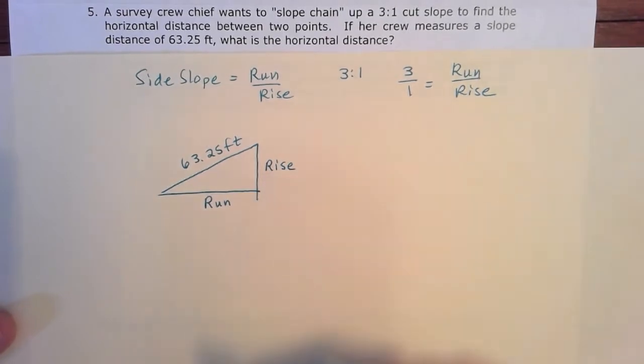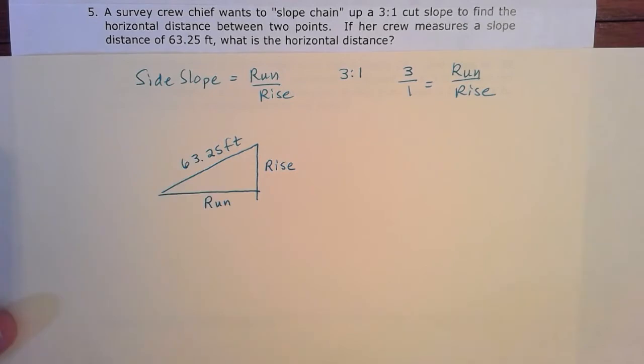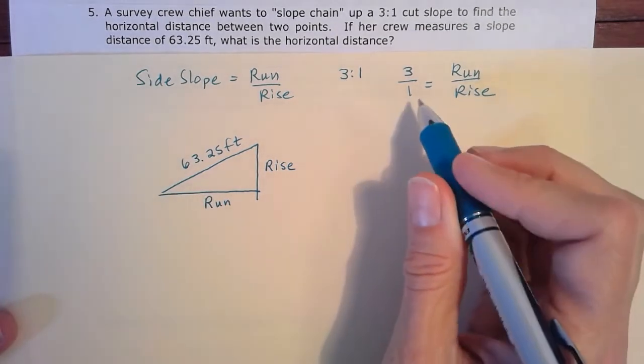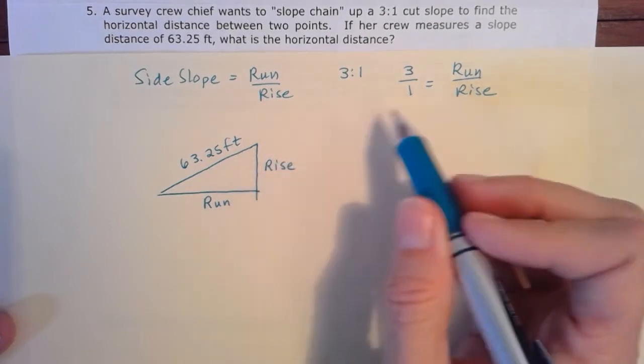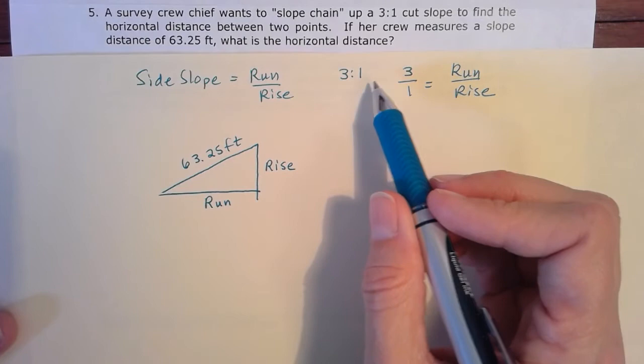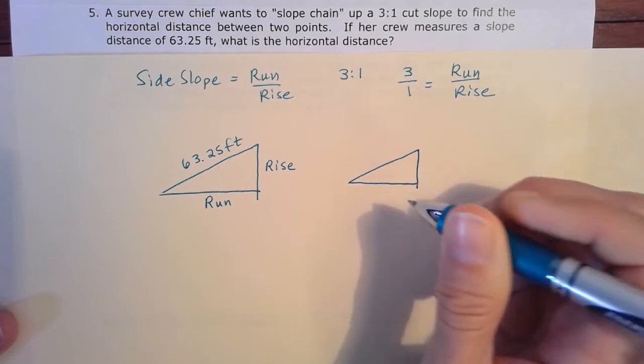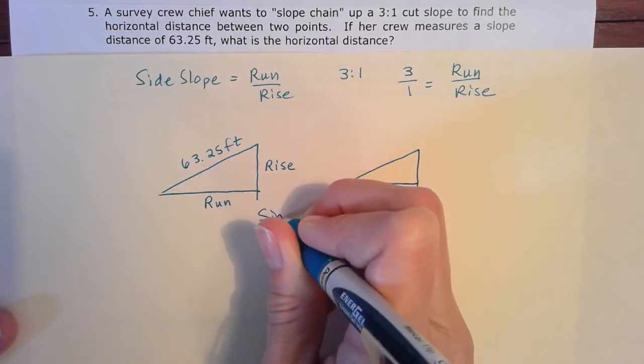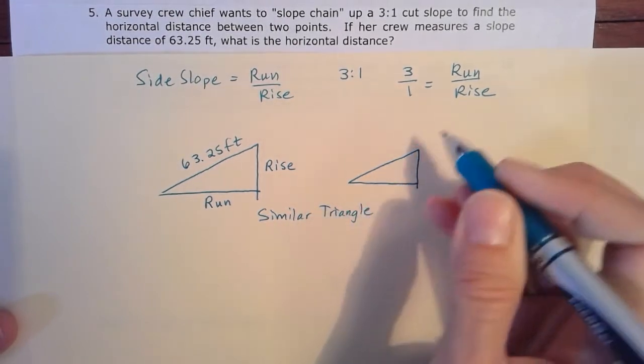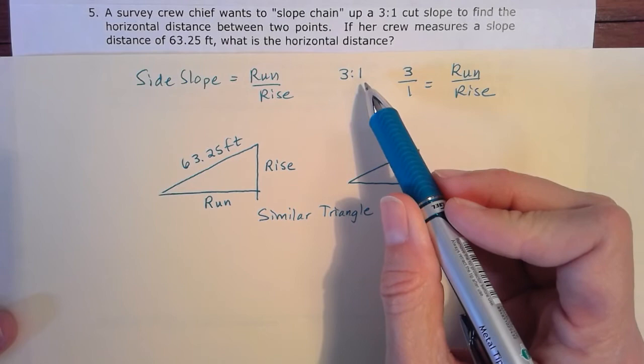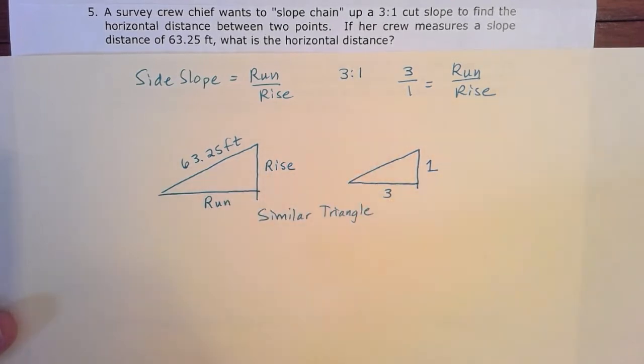But we are able to figure out some information from this angle. So one thing we can think about is that this is the triangle that is of interest. But we know that this slope follows this three-to-one pattern. So if we drew that triangle, just kind of a base similar triangle, so we're going to look at these two similar triangles. We know that a three-to-one means that three is our run and one is our rise. So these two triangles are similar to each other.